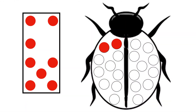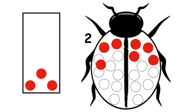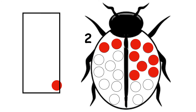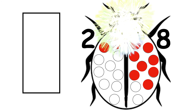Ladybird has 2 spots. 1, 2. How many more does she need to have 10? 1, 2, 3, 4, 5, 6, 7, 8. 2 and 8 make 10.